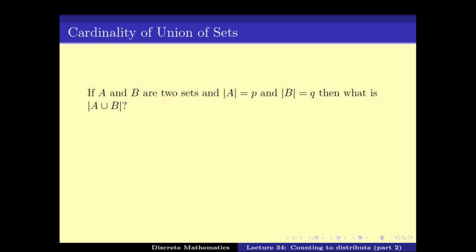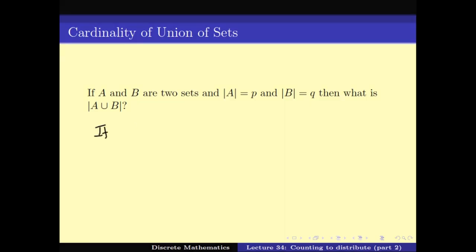The important thing is: if A and B are two sets with size of A equal to P and size of B equal to Q, what is the size of A union B? This is very similar to the additive law we studied two videos ago. It said that if A and B don't have anything in common — in other words if A intersection B is empty, meaning its cardinality is zero — then the cardinality of A union B is P plus Q.